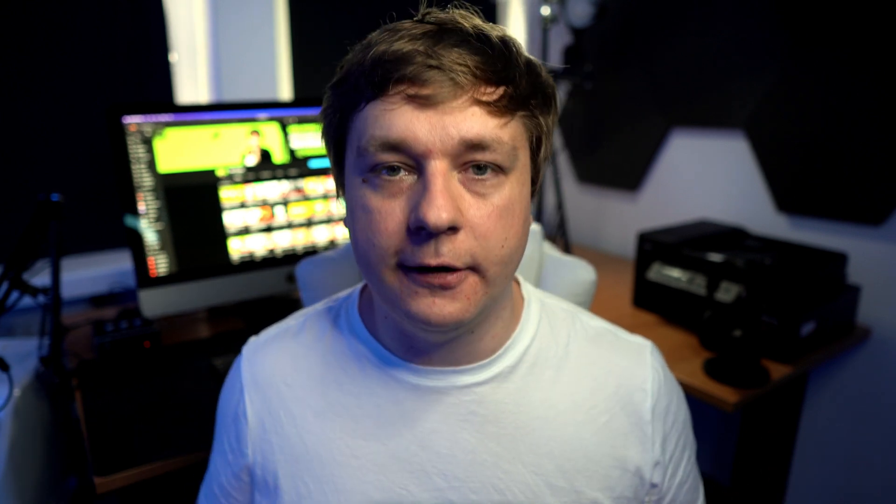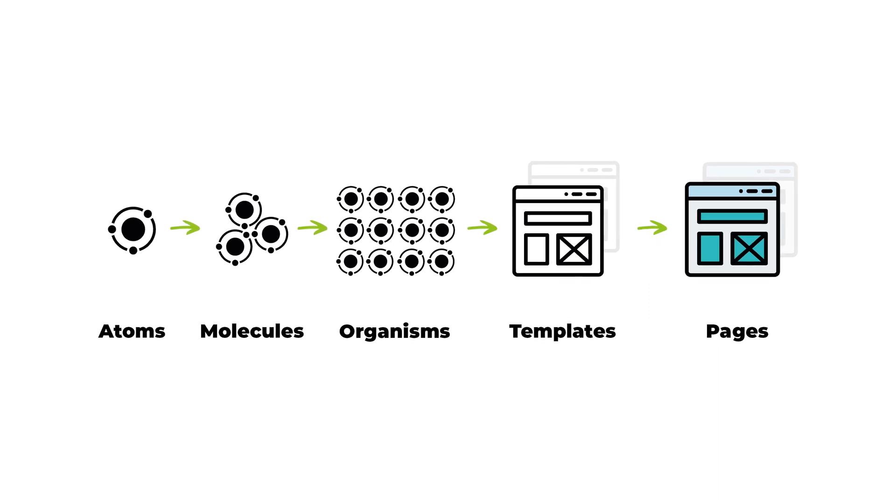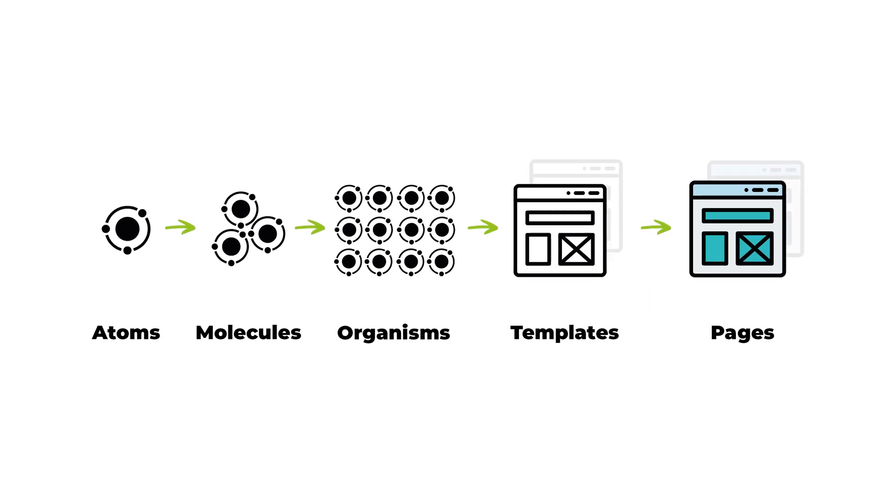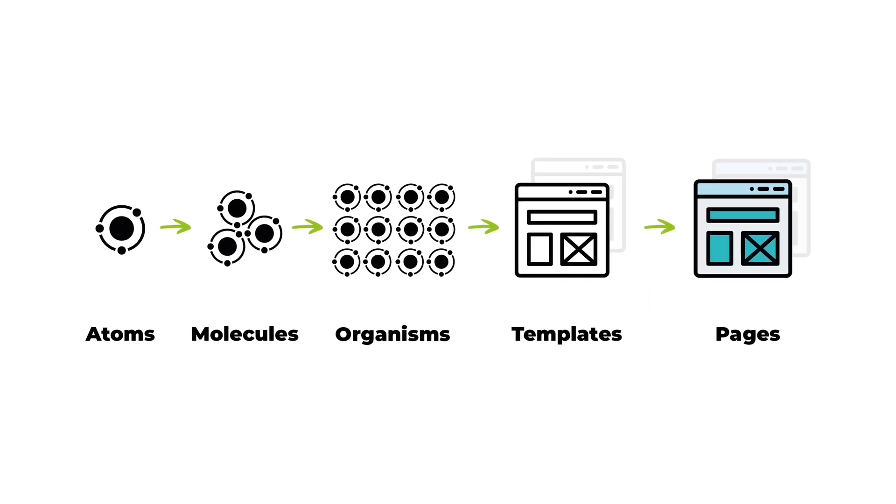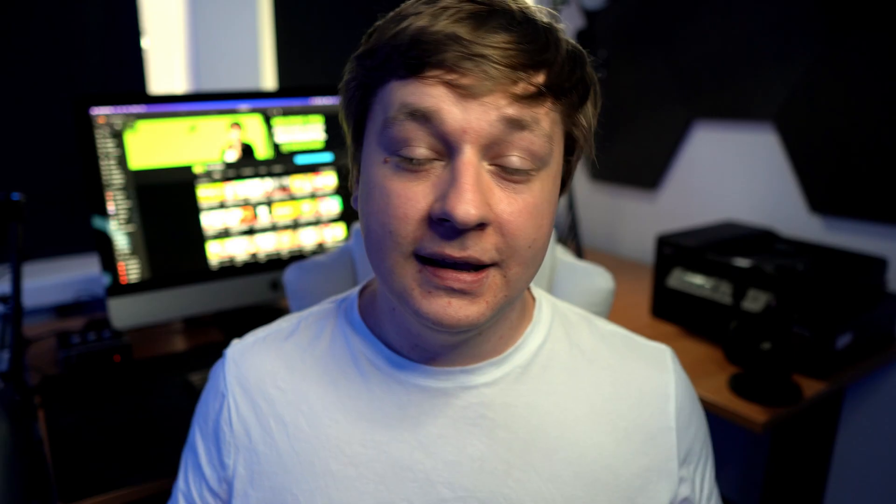When working on design systems, it's best to follow something called atomic design methodology. Atomic design is a methodology composed of five distinct stages working together to create design systems in a deliberate and hierarchical manner. Those five stages are atoms, molecules, organisms, templates, and finally pages.